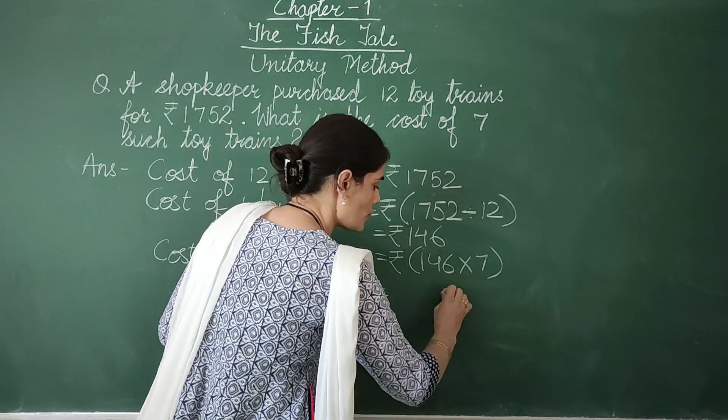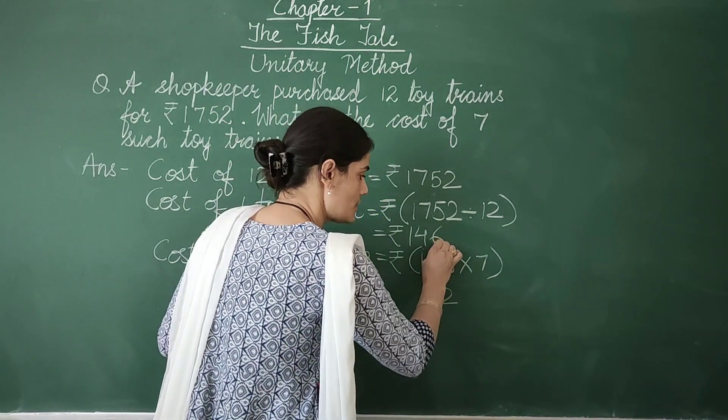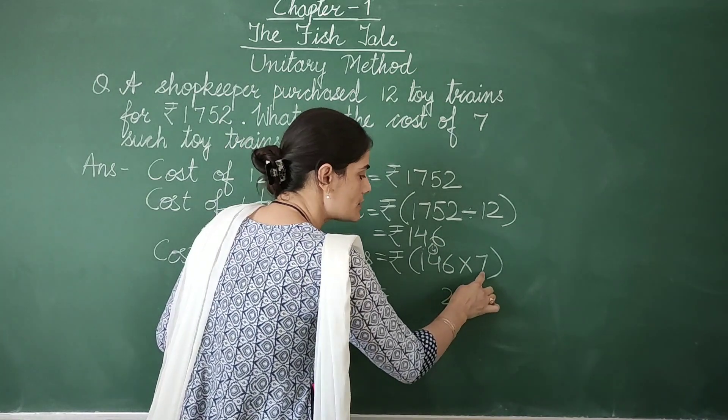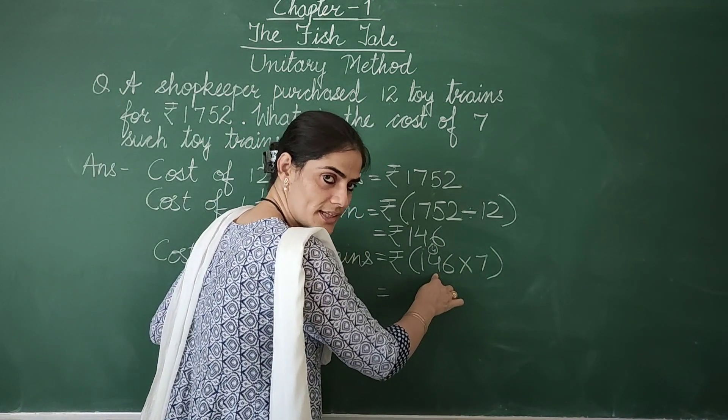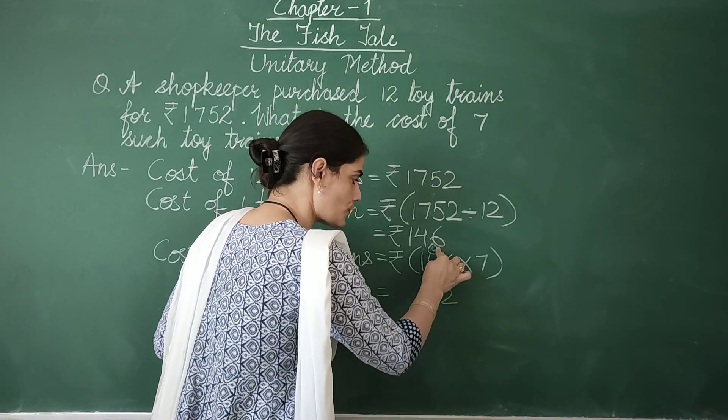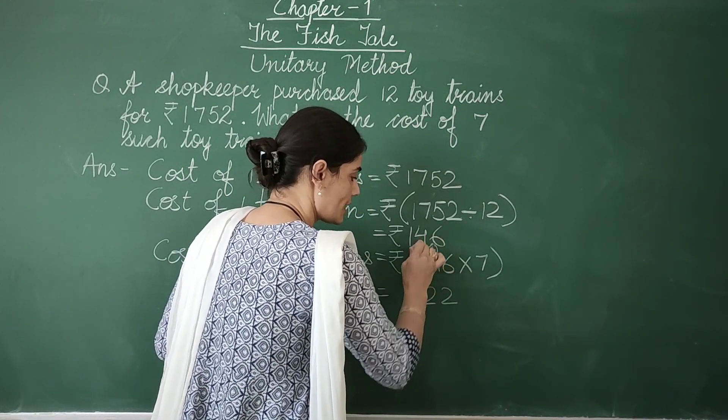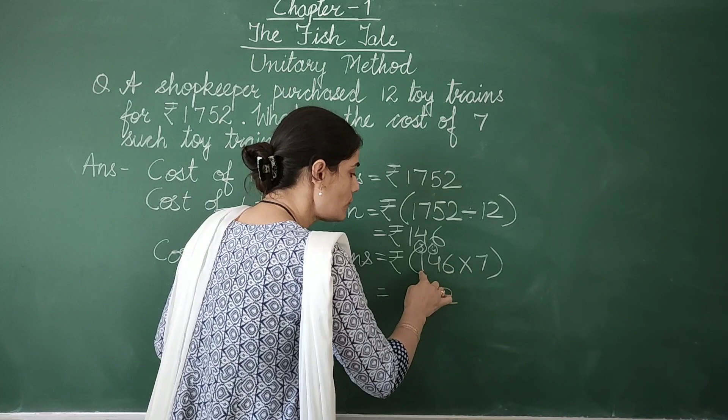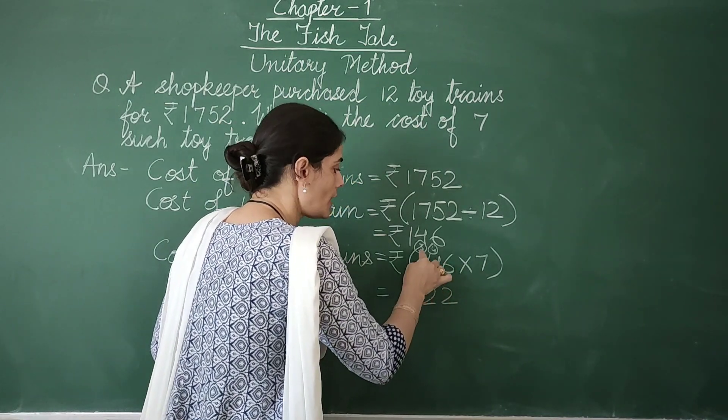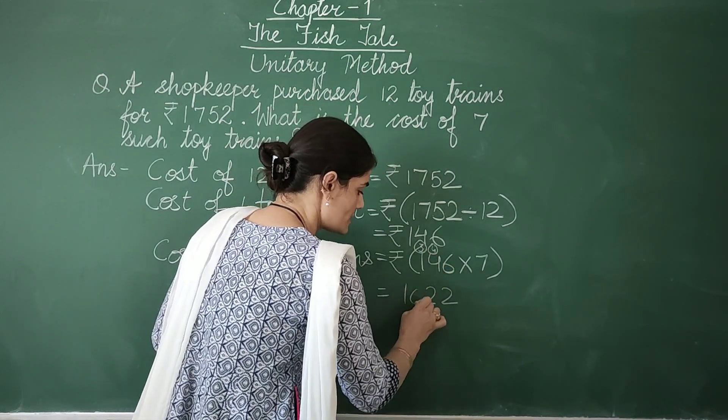7 sixes are 42. 2 I write. 4 I carry. 7 fours are 28. 28 plus 4 is 32. 2 I write. And 3 I carry. Now 7 ones are 7. And 7 plus 3 is 10.